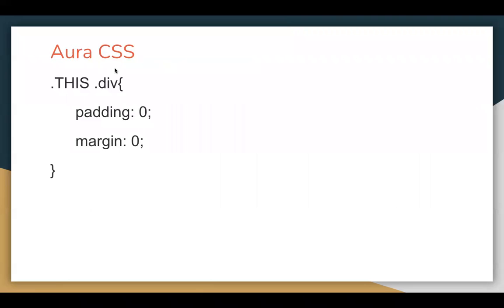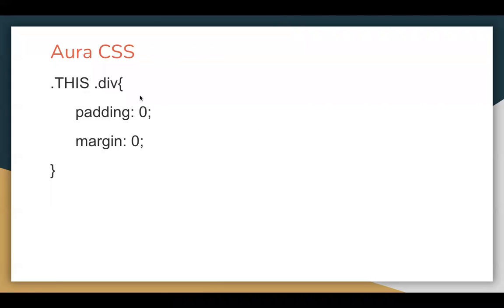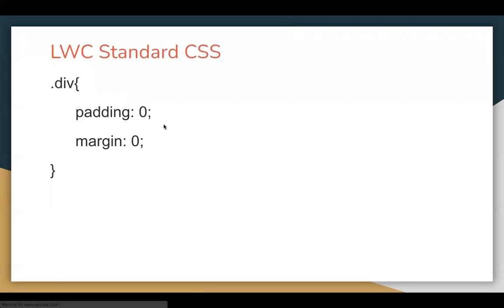For CSS, in Aura you write .THIS followed by the markup or tag name where you want to apply the CSS. In LWC you just write a dot followed by the tag name — you don't need .THIS in Lightning Web Component; it doesn't make any sense in LWC.